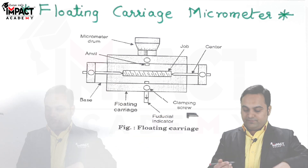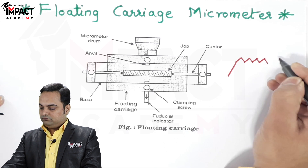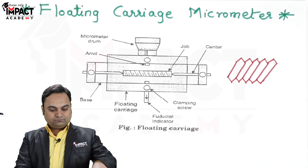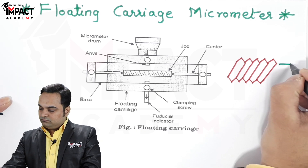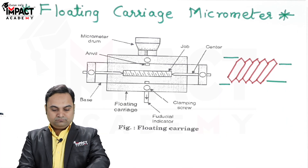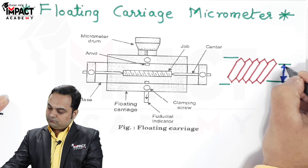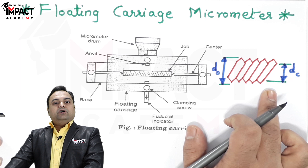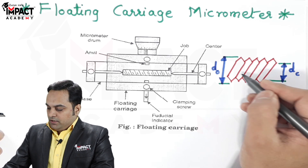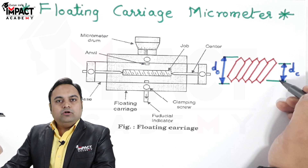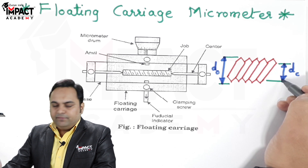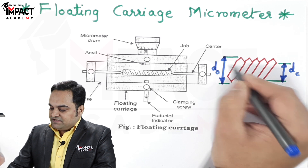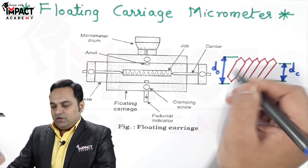Let me draw a rough profile here. Here is the diagram of a simple screw thread profile. That screw thread profile consists of the core diameter, also called the root diameter — this is the minimum diameter in a screw. Then we have the outer diameter, also called the nominal diameter.